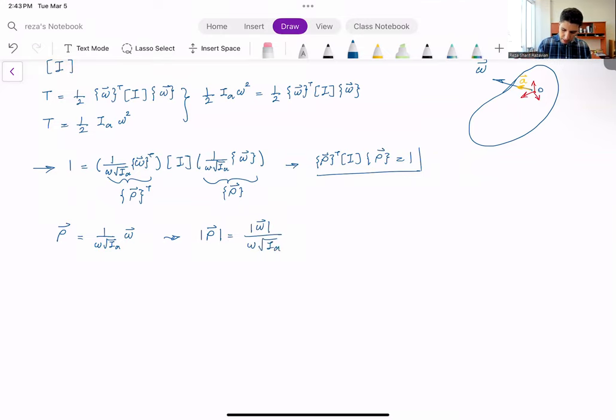And norm of rho is norm of omega divided by this scalar omega square root of i_a. And remember that omega is actually the norm of vector omega. So from here, norm of rho is one over square root of i_a, but also let me drop the a, because i and rho are on the same axis. So the norm of this rho is actually inversely related to the moment of inertia about that axis of rotation.